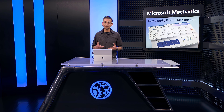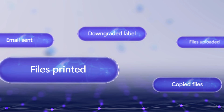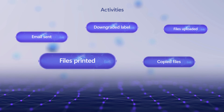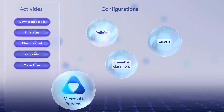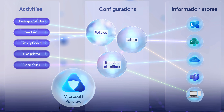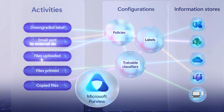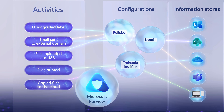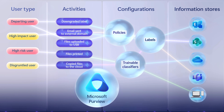When you use them, those signals will also flow into Data Security Posture Management — this includes all logged activities and any configurations you may have set. DSPM takes those signals and connects the dots across where information is stored, how it's being moved, even who is moving it, and their level of user risk.